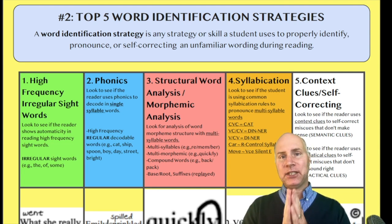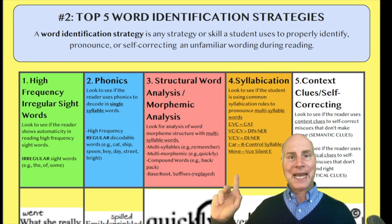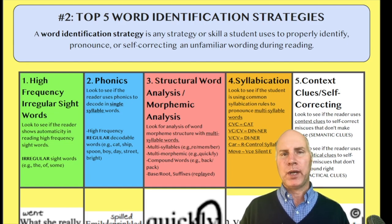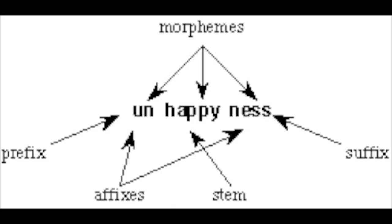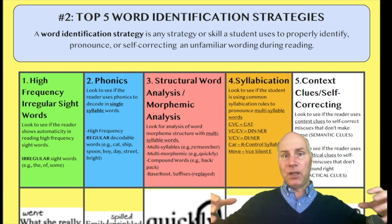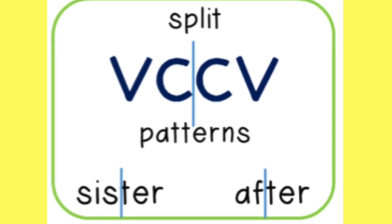Here's the big difference: they both involve multi-syllable words, but structural word analysis — or morphemic analysis — is when we're working with a multi-syllable word and we break it up into its morphemes: think prefix, base, root word, suffix. That's structural word analysis or morphemic analysis. Syllabication is when we have a multi-syllable word and the student breaks it into decodable syllables.